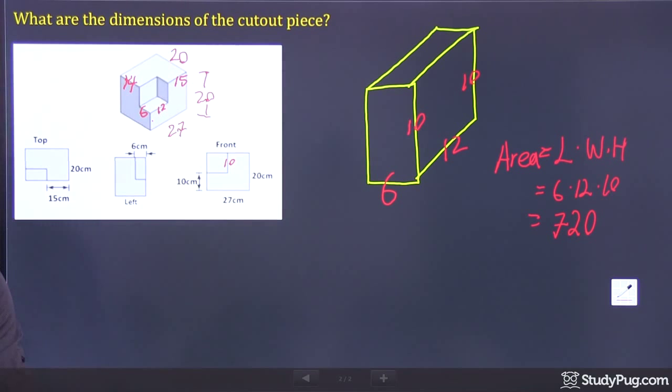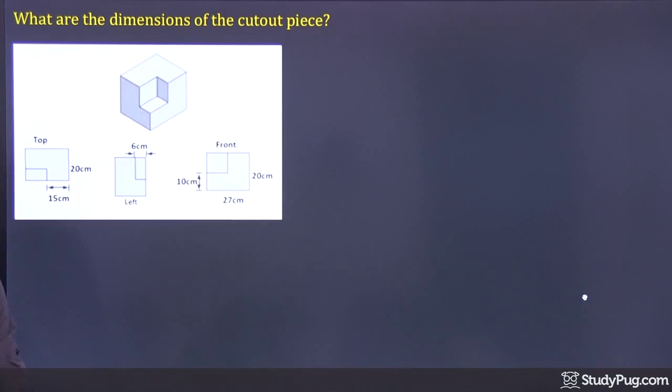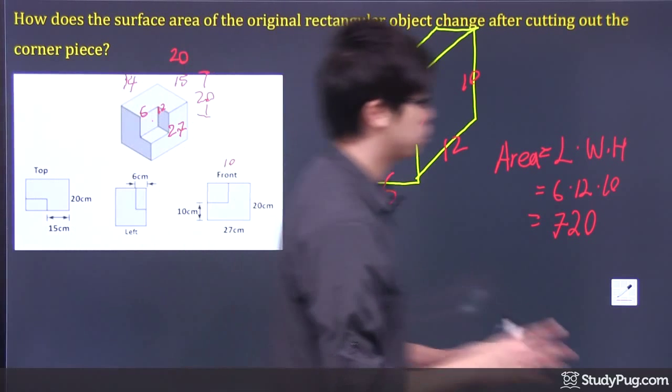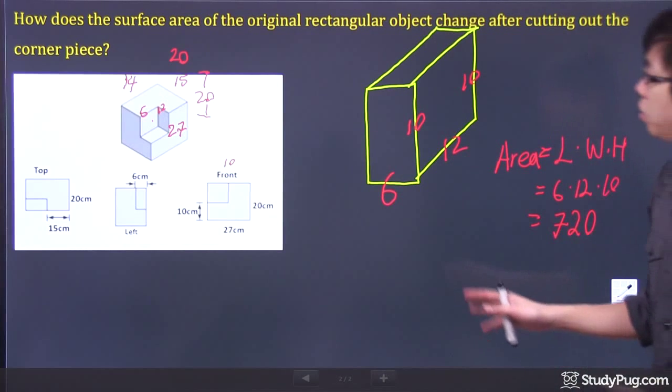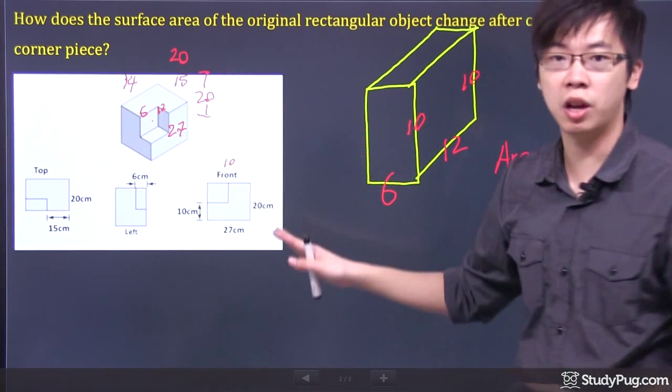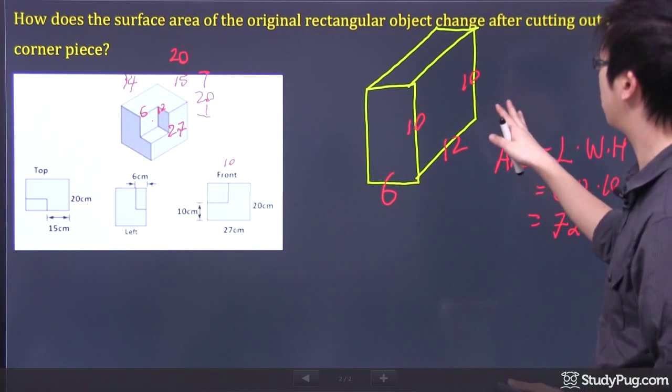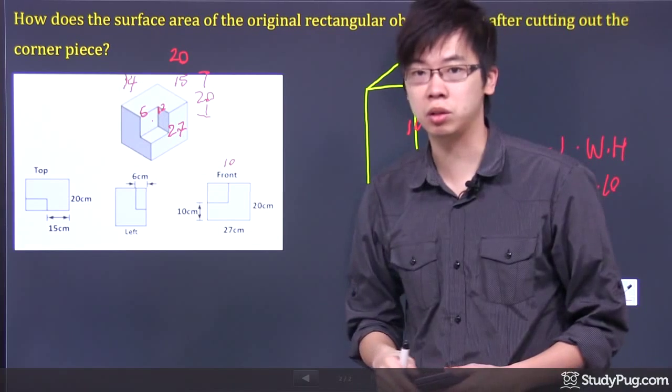And then let's quickly go to the next question and see what they're asking for. They're looking for, let me still remember, we still have the dimension of 720, right? But as you can see, the next question says, how does the surface area of the original rectangle object change after cutting out that corner piece?